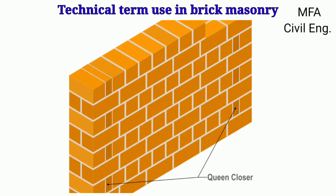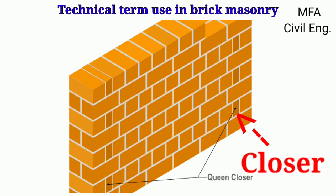At the end of a course of a brick wall, a piece of brick which is laid to close the bond in masonry construction is called the closure. Closure helps in preventing the joints of successive courses of a masonry wall from coming in a vertical line. There are four types of closures used in brick masonry.